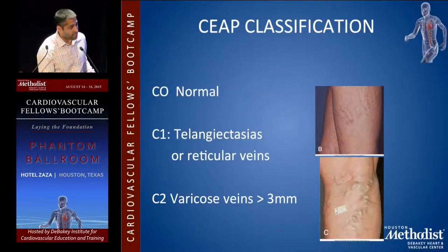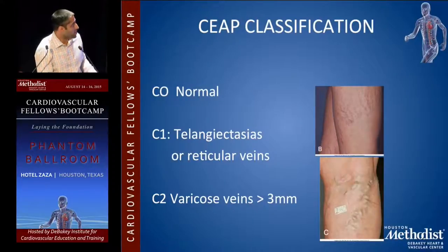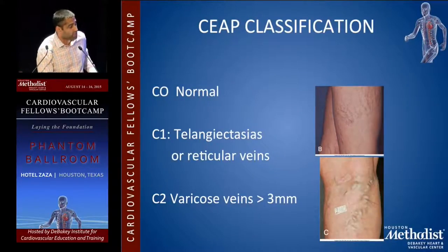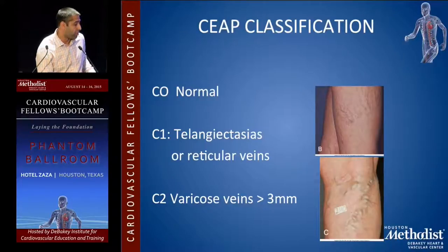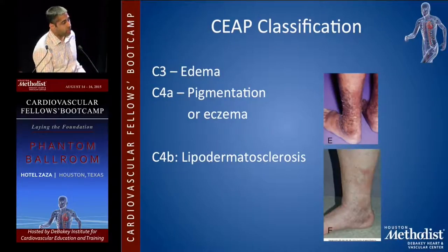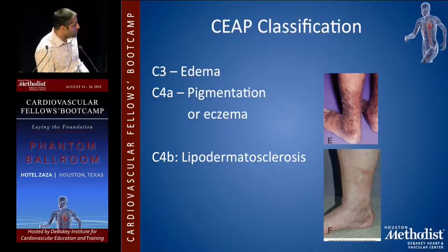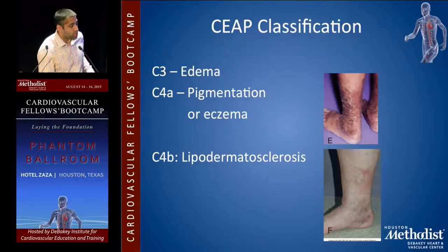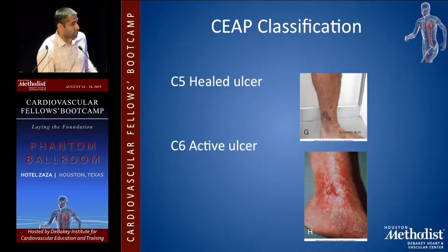The CEAP classification is how we grade these problems. C0 is normal. C1 is telangiectasias or reticular veins. C2 is varicose veins greater than 3 millimeters in diameter. C3 is edema. C4A is pigmentation or eczema. C4B is skin changes, which includes lipodermatosclerosis. C5 is a healed ulcer and C6 is an active ulcer.